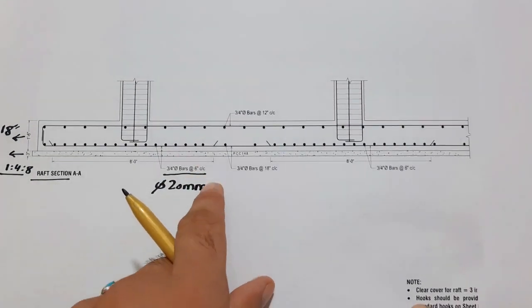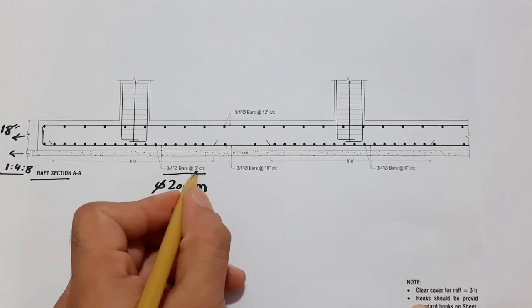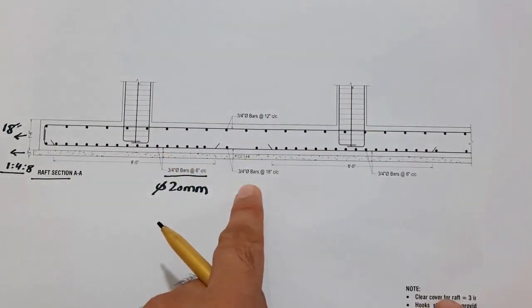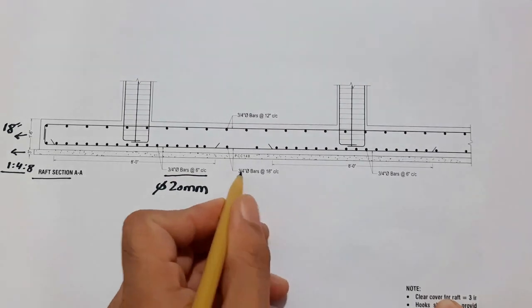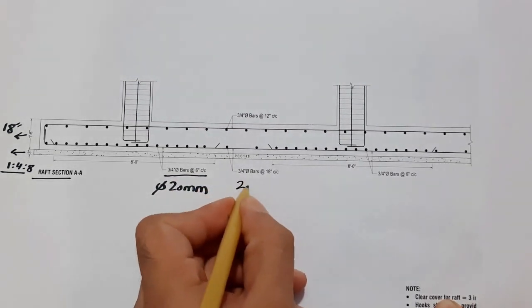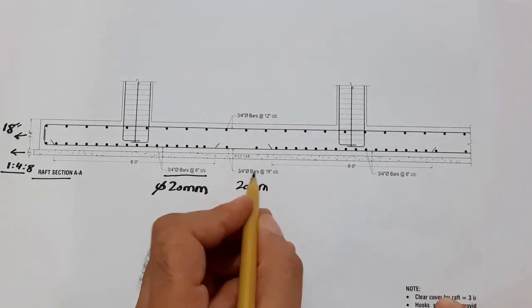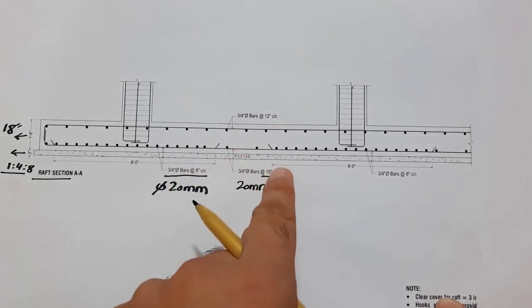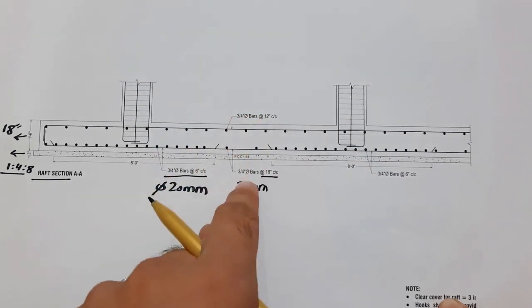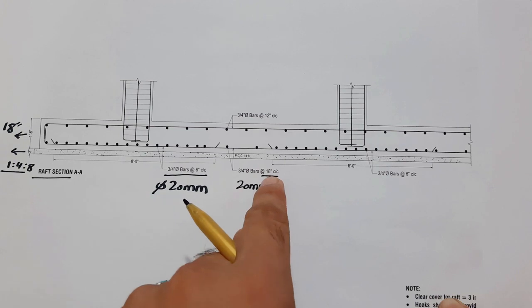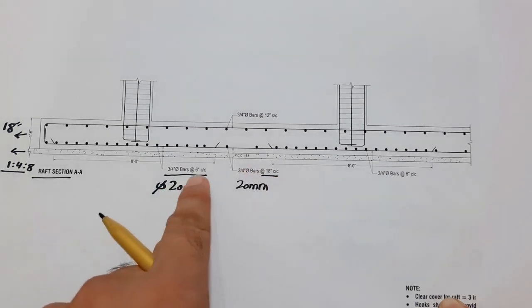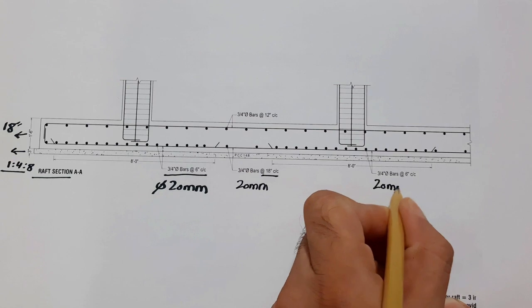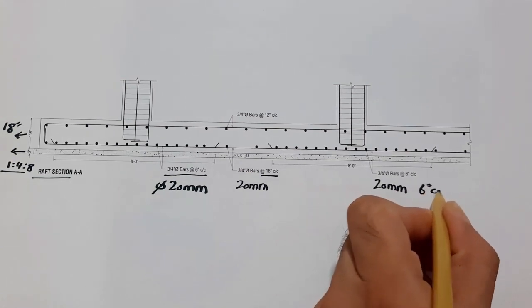Why is the spacing minimum 6 inches? Because here we have a column, so there is structural load on the raft foundation. When you come to the center, main bar and distribution bar diameter is same, which is 20 millimeter or 3/4 inches, with spacing of 18 inches because the structural load is not applied on the center. Therefore the bottom bar spacing is 18 inches compared to 6 inches at columns. When you come to this side, same diameter of 20 millimeter with spacing of 6 inches.